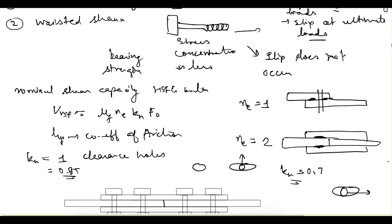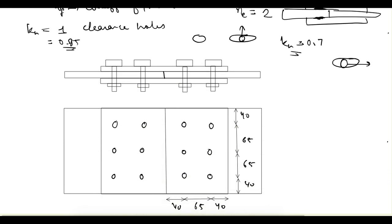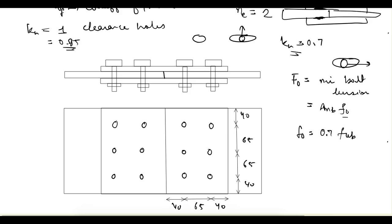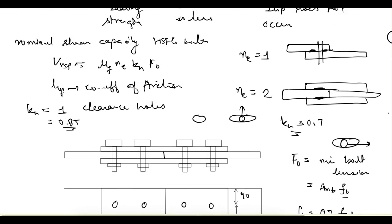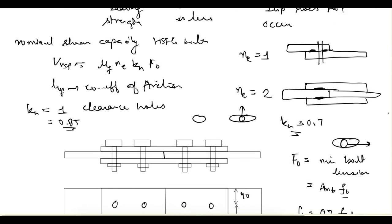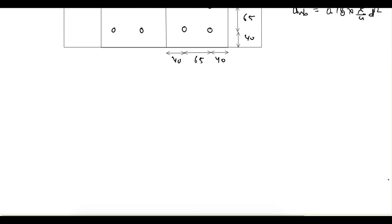f0 is the minimum bolt tension at installation. f0 equals Anb times small f0, where small f0 is the proof stress equal to 0.7 times fub, that is 0.7 times the ultimate stress of the bolt. Anb is the root area, equal to 0.78 times π/4 times d². Putting all these values together, we can find the nominal shear capacity.